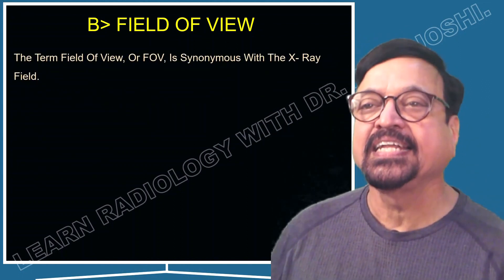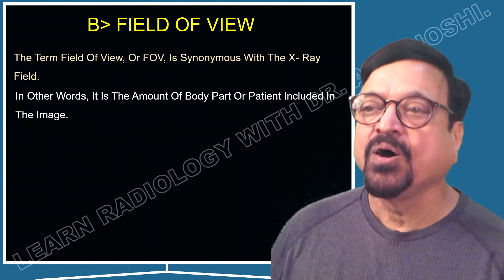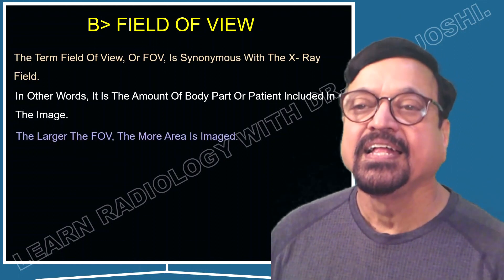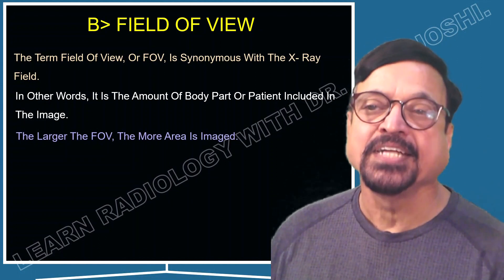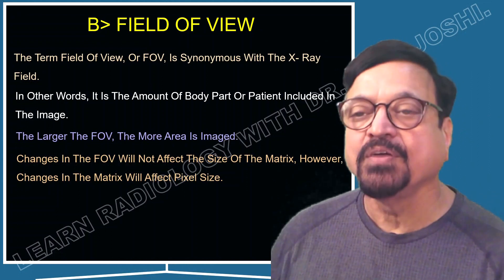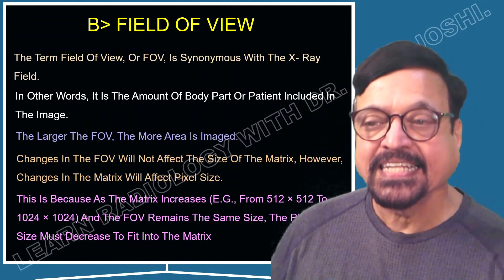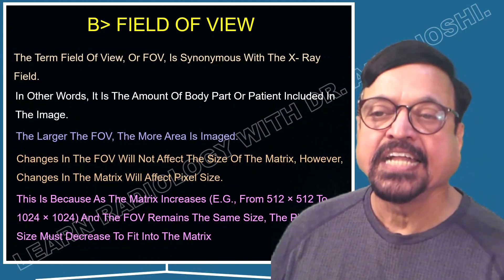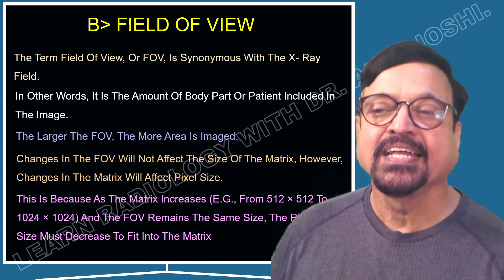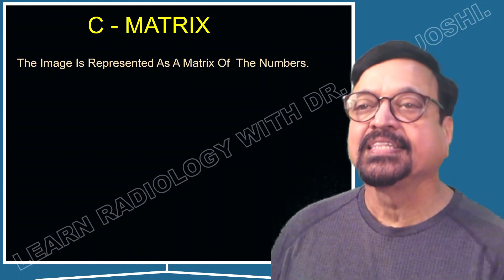The field of view (FOV) is synonymous with the X-ray field — in other words, it is the amount of the body part or patient included in the image. The larger the FOV, the more area is imaged. A change in FOV will not affect the size of the matrix; however, a change in matrix will affect the pixel size. For example, if the matrix increases from 512×512 to 1024×1024 and the FOV remains the same, the pixel size must decrease to fit within the matrix.